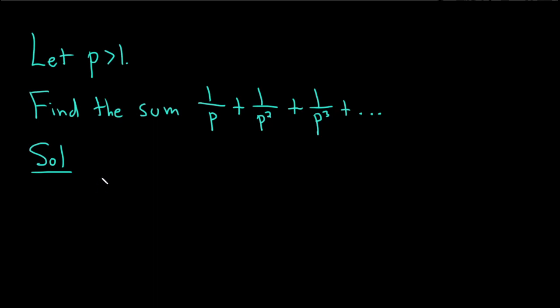So if p is bigger than 1 then if we divide both sides by p that tells us that 1 is bigger than 1 over p. Or in other words 1 over p is less than 1. So we know that 1 over p is less than 1 so we have a geometric series.